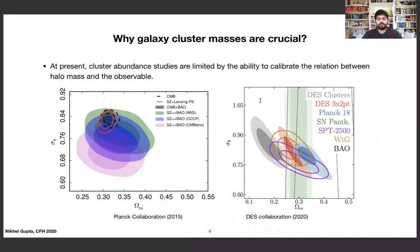This basically shows why the masses of galaxy clusters are really crucial to do cluster cosmology. At present, we are limited by the mass calibration. That's why more and more galaxy cluster experiments are focusing on getting the mass of galaxy clusters precisely and accurately. For example, there are two plots I'm showing here: on the left from the Planck collaboration 2015, and on the right from the Dark Energy Survey collaboration.